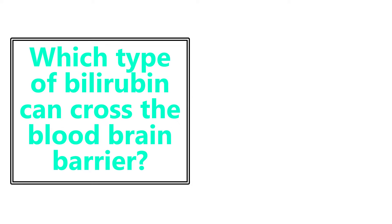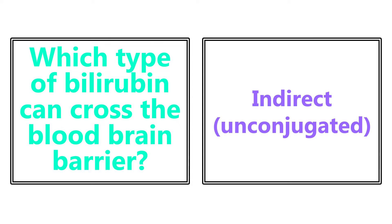Which type of bilirubin can cross the blood-brain barrier? This is indirect, or unconjugated, bilirubin. This is why patients with elevated indirect bilirubin can present with kernicterus or altered mental status — this bilirubin crosses the blood-brain barrier and causes problems.